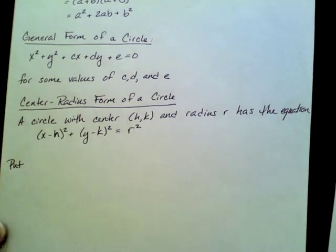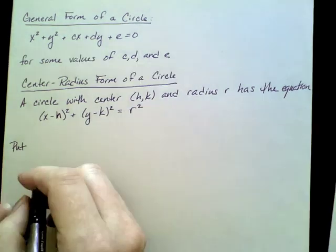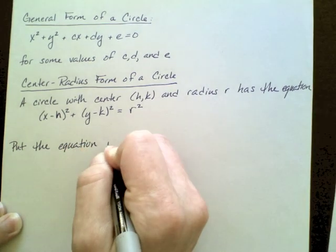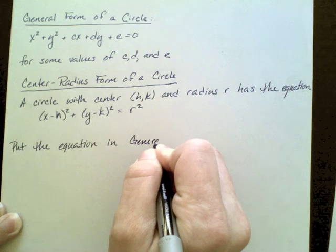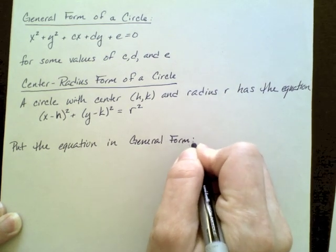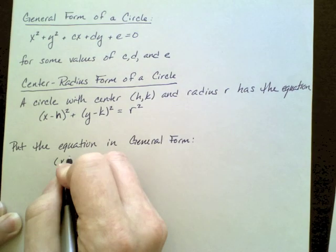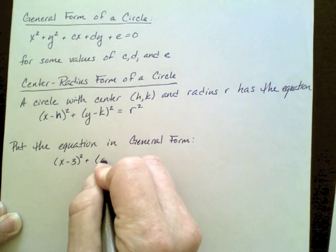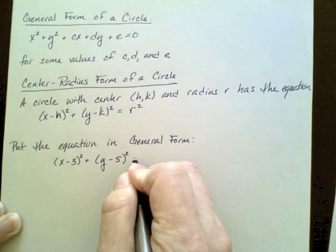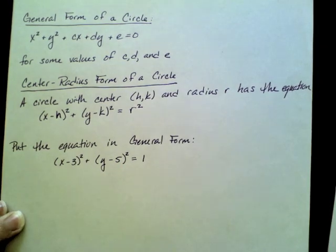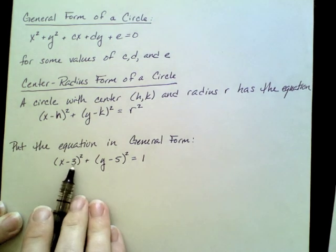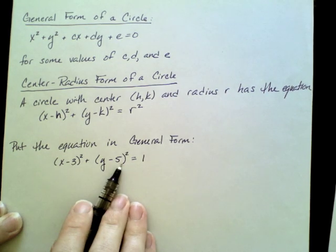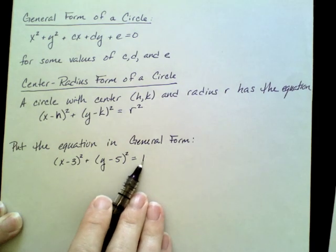I'm going to move my paper up so you can see, and I will say put the equation in general form. The equation we'll work with will be (x-3) squared plus (y-5) squared equals 1. So this is a circle with center (3,5) and radius of 1.